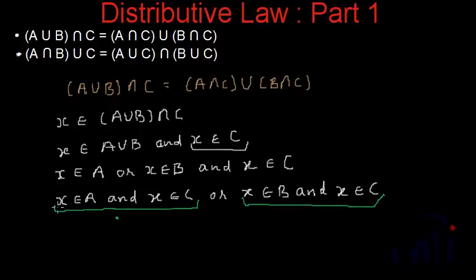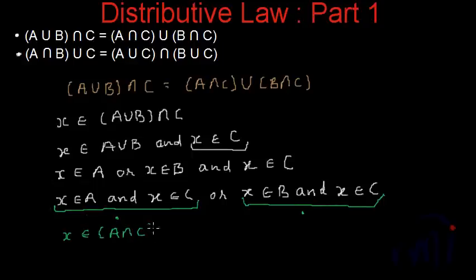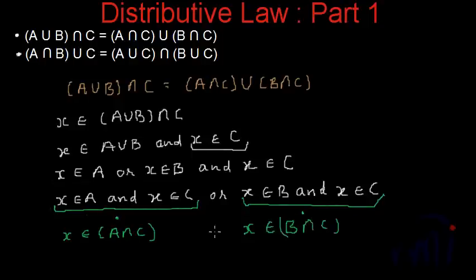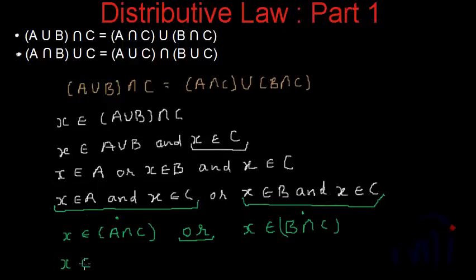Either X is an element of A and X is an element of C, or X is an element of B and X is an element of C — one of these conditions is definitely true, and both can also be true. If X is in both A and C, then X will be an element of A intersection C. And from the other condition, X will be an element of B intersection C. So from here we can say that X is an element of A intersection C union B intersection C.